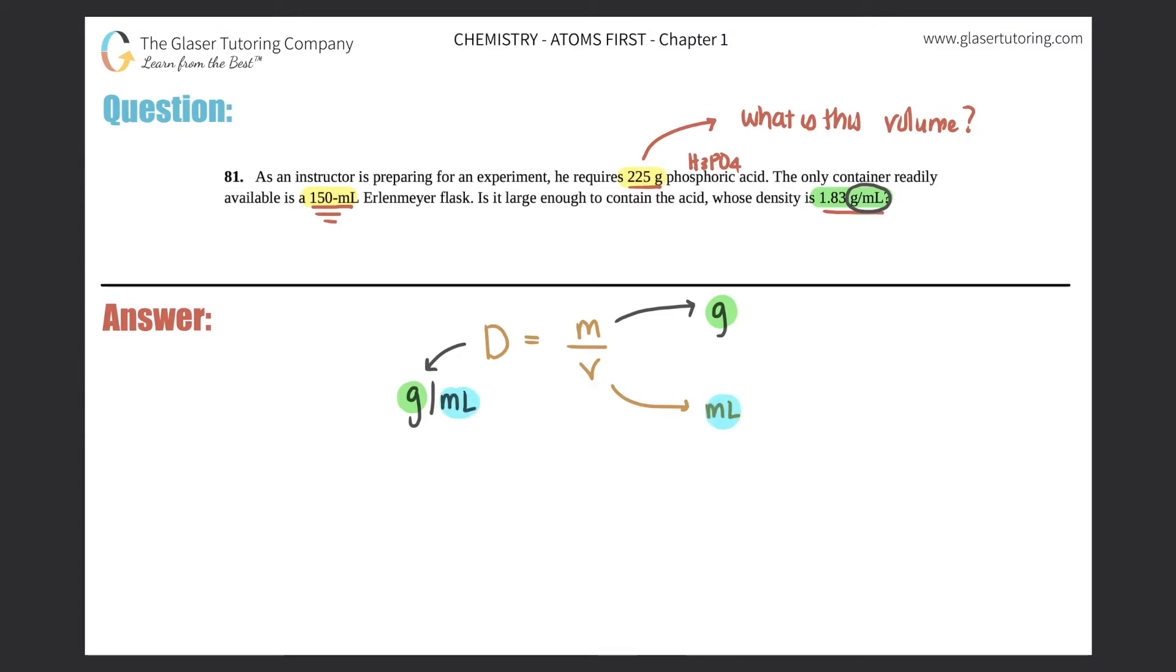But it's good because they gave me grams, 225 grams, and they gave me grams per mil. So in this case, this is going to be 1.83 grams per mil, and they're telling us it's 225 grams. So we just have to find out what this volume is.